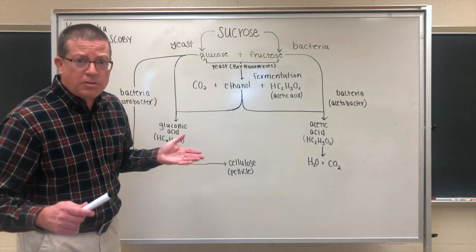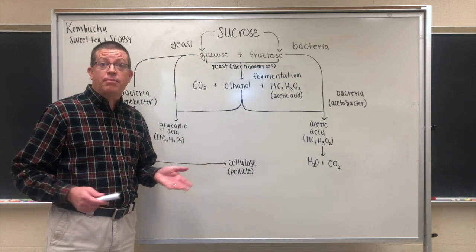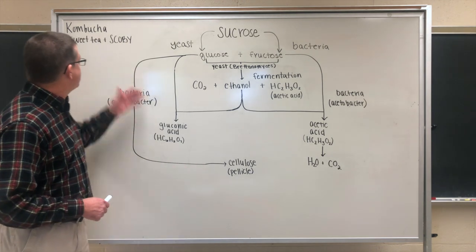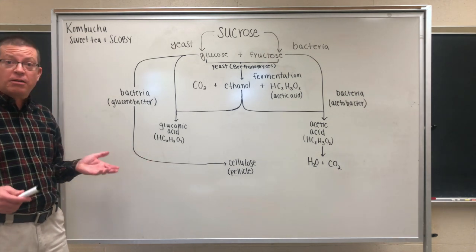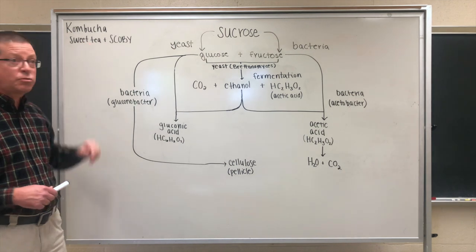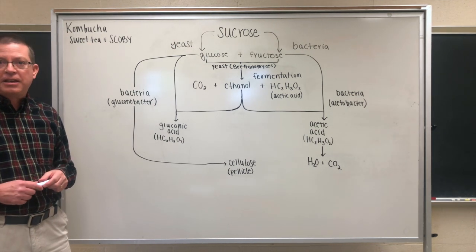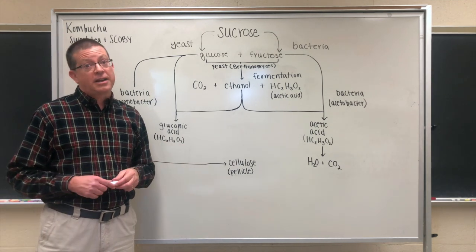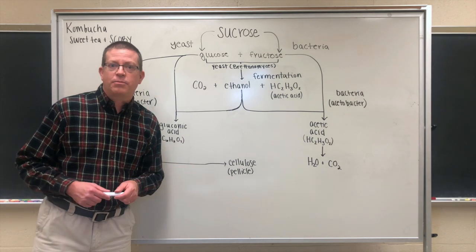Let's begin by talking about what we all know. What are the components of kombucha when we begin to brew it? If we want to make kombucha, we have to start out with two important ingredients. We have to start out first with sweet tea. The sugar in the tea is the primary food that the microorganisms that make the kombucha are going to consume.